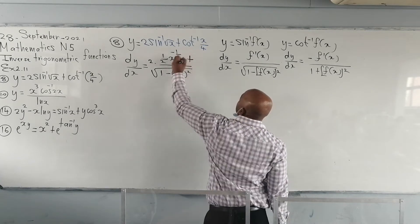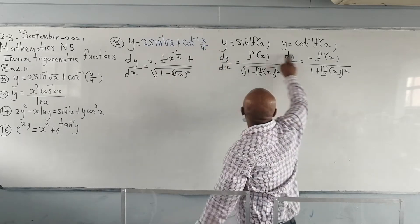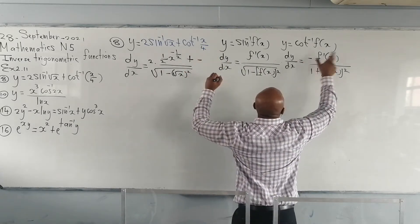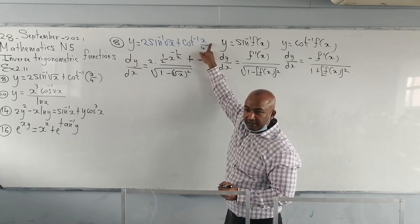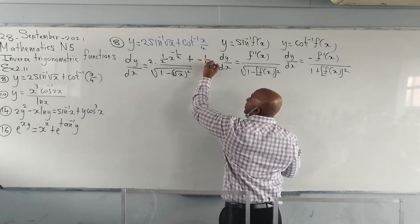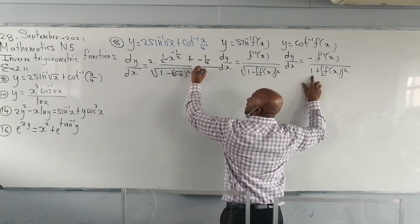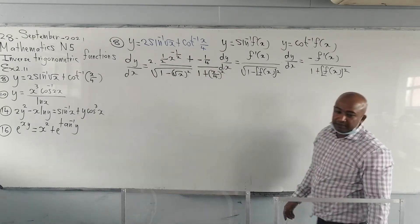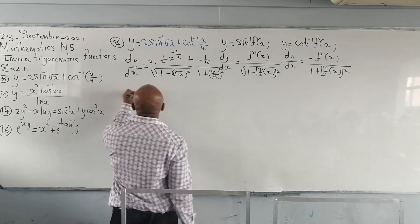Then we've got plus inverse cot of x over 4. So this formula also has a negative. So I put my negative here, and then f prime of x — f of x is x over 4, so when you differentiate x over 4, it's just 1 over 4. All divided by — there's no square root here — so that's 1 plus f of x all squared.